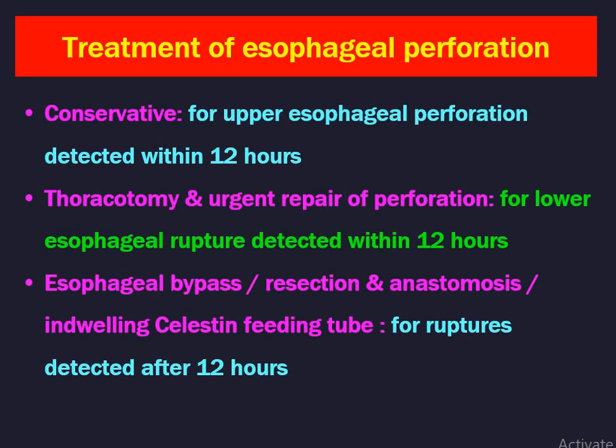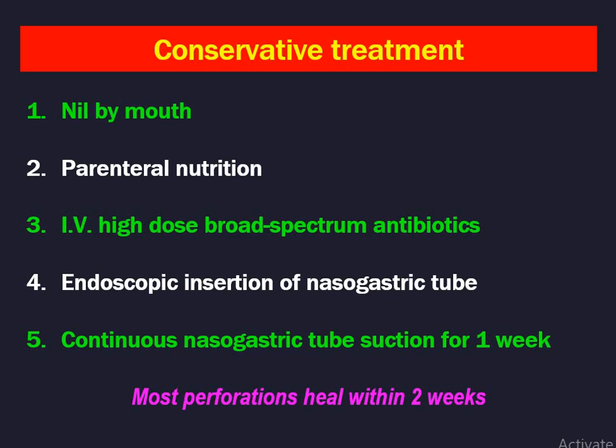How to treat esophageal perforation? Treatment can be performed by conservative methods, thoracotomy, or esophageal bypass. Conservative management is for upper esophageal perforation detected within 12 hours. Thoracotomy and urgent repair is for lower esophageal perforation detected within 12 hours. Esophageal bypass, resection and anastomosis, or indwelling Celestin tube is for perforations detected after 12 hours. Conservative treatment involves: nil by mouth, parenteral nutrition, IV high-dose broad spectrum antibiotics, endoscopic insertion of nasogastric tube under visualization, and continuous nasogastric suction for one week. Most perforations heal within two weeks.